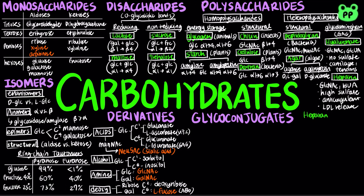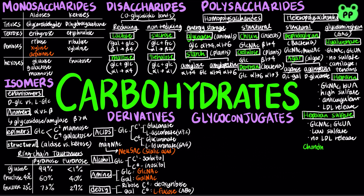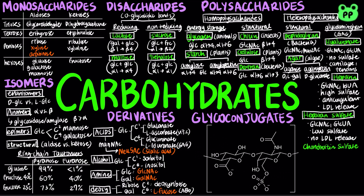Heparan sulfate is produced by all animal cells and consists of repeating units of GlcNAc and glucuronate. It has lower sulfate content than heparin. Chondroitin sulfate consists of repeating units of GlcNAc and glucuronate. It contributes to the tensile strength of cartilage, tendons, ligaments, and the walls of the aorta. It is also present in blood vessels and heart valves.